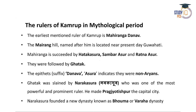The earliest mentioned ruler of Kamrup is Mohiranga Danav — very important and often asked in competitive examinations. The Mohiranga Hill located in present-day Guwahati city is named after him. Mohiranga Danav was succeeded by Hataka Khur, Sambar Khur, and Ratna Khur, followed by Ghatak — all descendants of Mohiranga Danav.